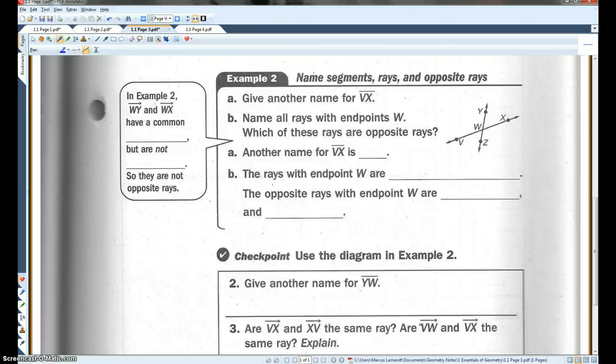Alright. Example two. Give another name for VX. Okay. VX is this here. We could call it XV. The rays with endpoint W, there's actually four of them. There's WY, WZ, WX, and WV. Make sure you guys put your arrows in the correct place. Okay. The opposite rays with endpoint W would be WX and WV and WY and WZ. Okay.